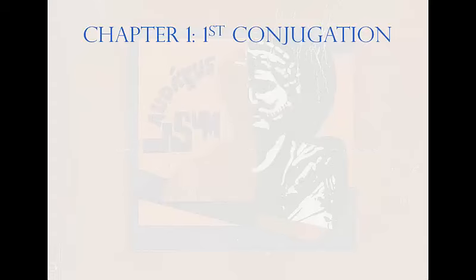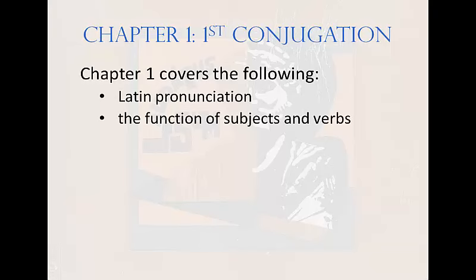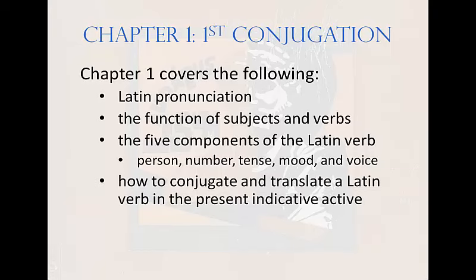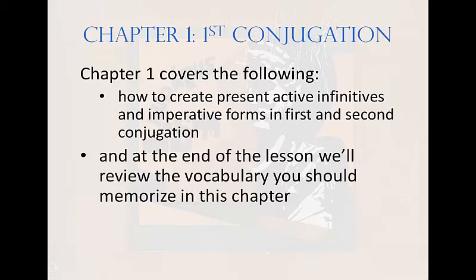Chapter 1: First Conjugation. Chapter 1 covers the following: Latin pronunciation, the function of subjects and verbs, the five components of the Latin verb — those are person, number, tense, mood, and voice — how to conjugate and translate a Latin verb in the present indicative active, and how to create present active infinitives and imperative forms in the first and second conjugation. At the end of the lesson, we'll review the vocabulary you should memorize in this chapter.